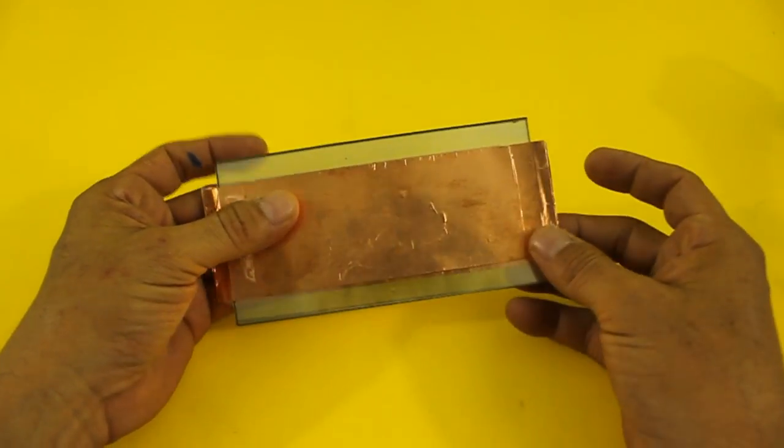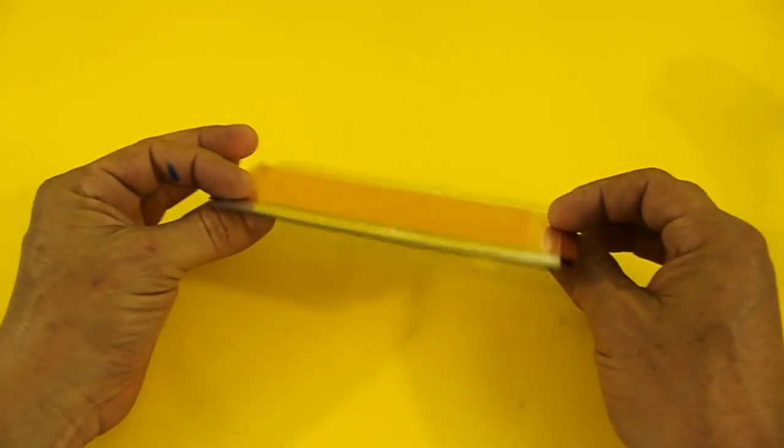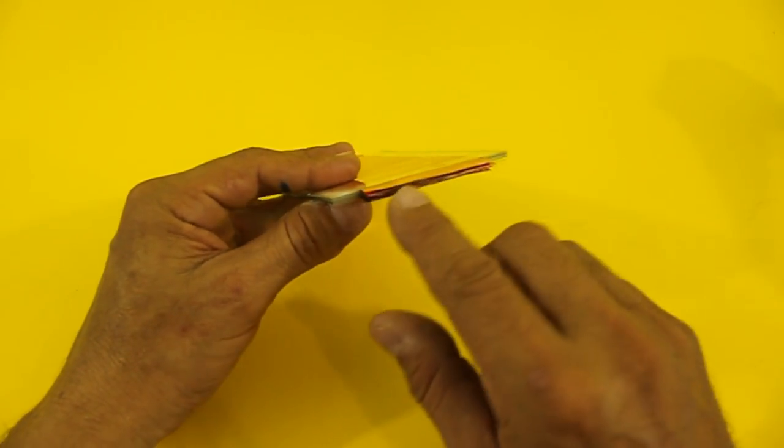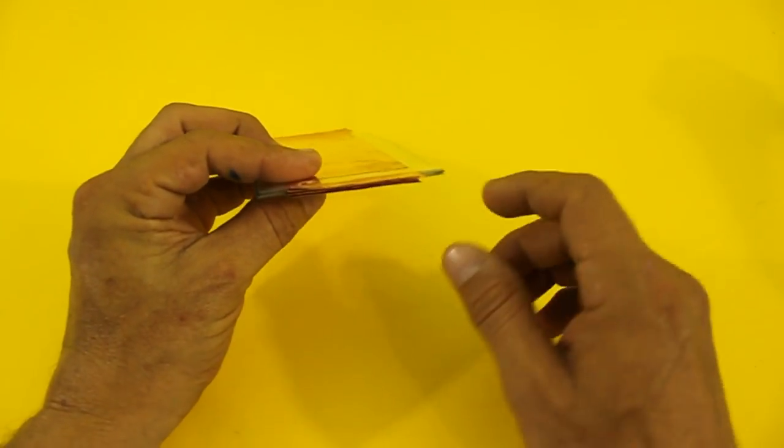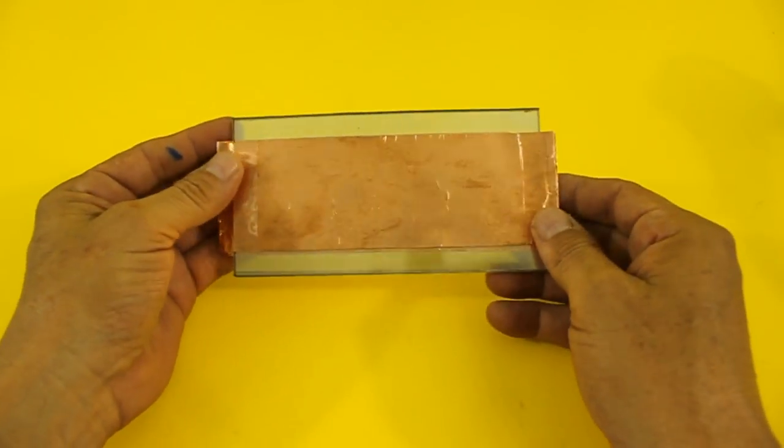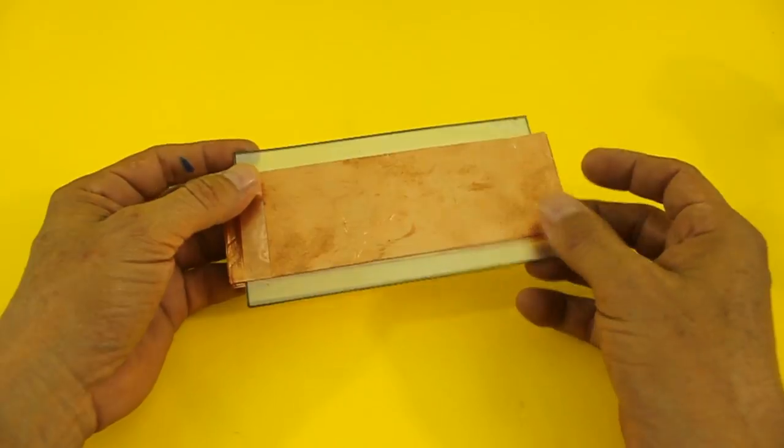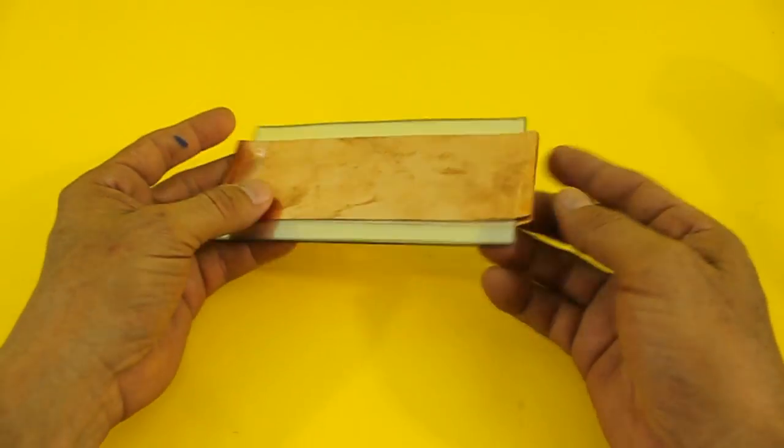Okay, all the layers of the capacitor are glued together. Now I will apply solder to all the terminals in both sides. For this capacitor I used a total of 12 layers, so I have 6 terminals on each side.